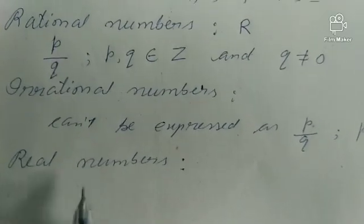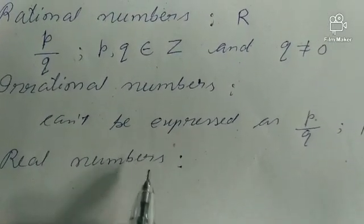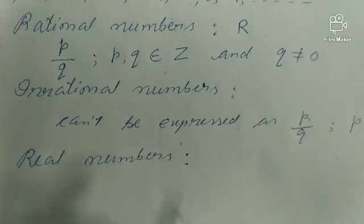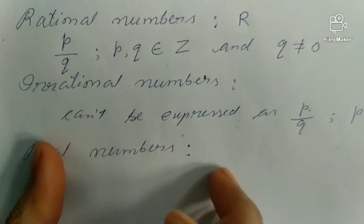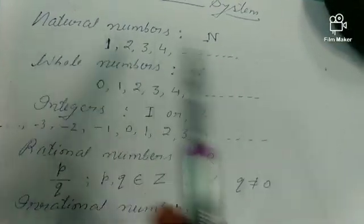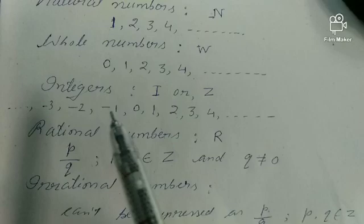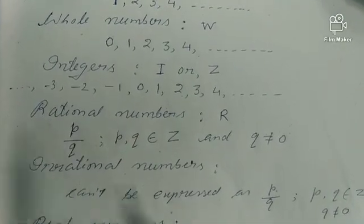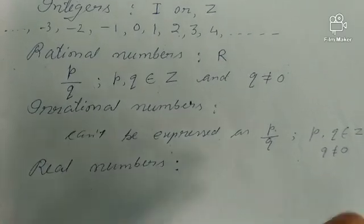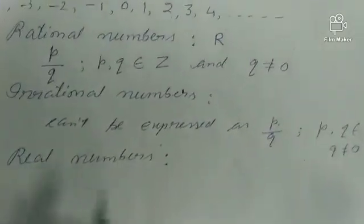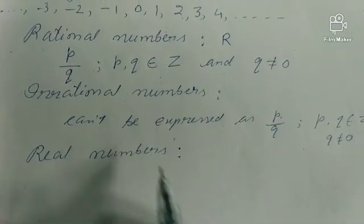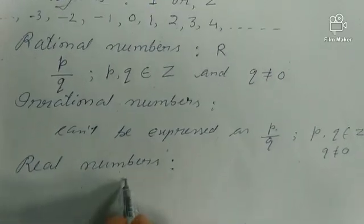Now, one more concept is real numbers. Real numbers means all those numbers which are known to us — all those numbers in this world which are present. Natural numbers, whole numbers, integers, rational numbers, and irrational numbers are all real numbers. That is why the real number system is the largest number system, because all these numbers come under real numbers.